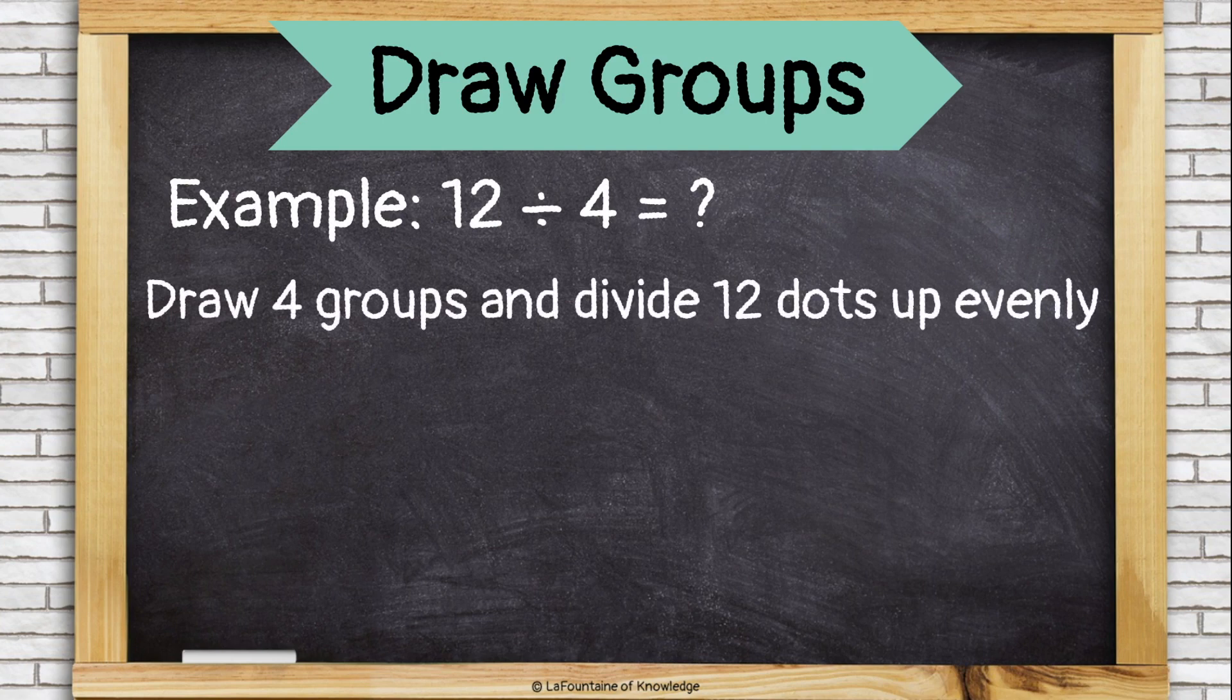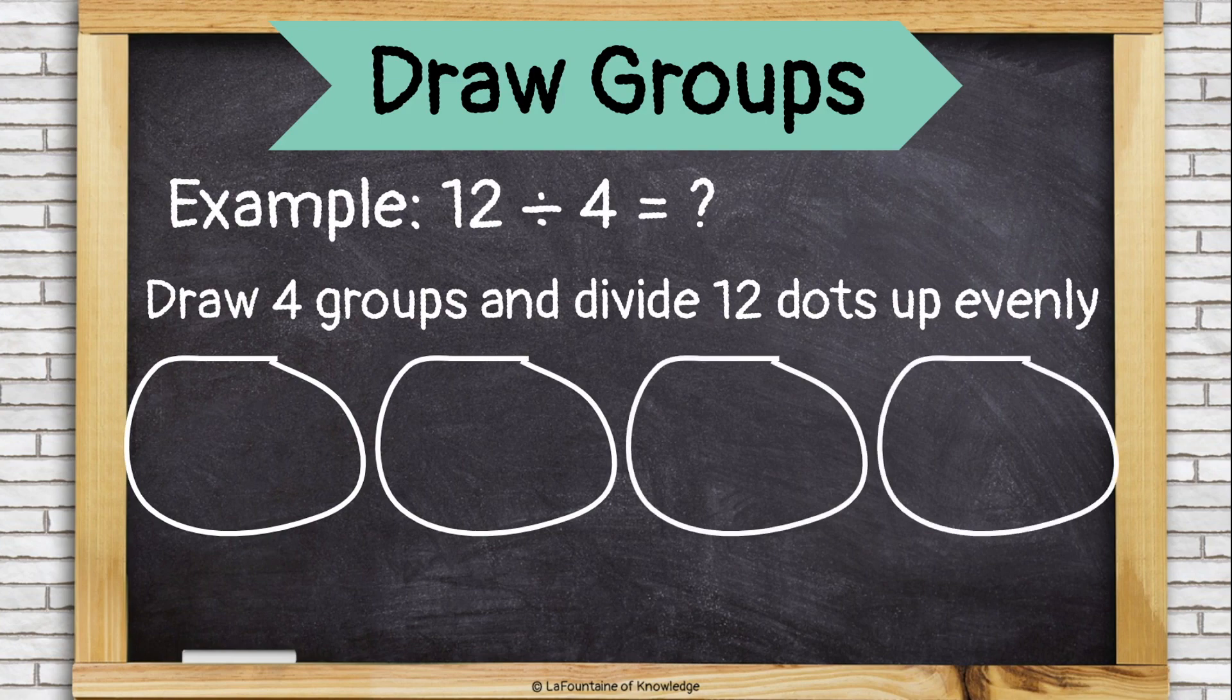First, we're going to draw four groups. Then we'll divide up 12 dots or tally marks evenly into these four groups. So I like to think about this like dealing cards. I give each group one dot like this.